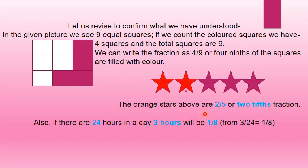We can write the fraction as 4 upon 9, or 4 ninths of the squares are filled with color. The orange stars shown are 2 upon 5, or 2 fifths fraction. Also, if there are 24 hours in a day, 3 hours will be 1 upon 8, since 3 upon 24 equals 1 upon 8.